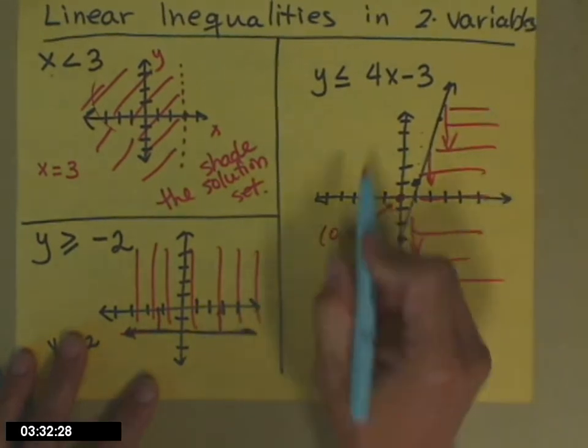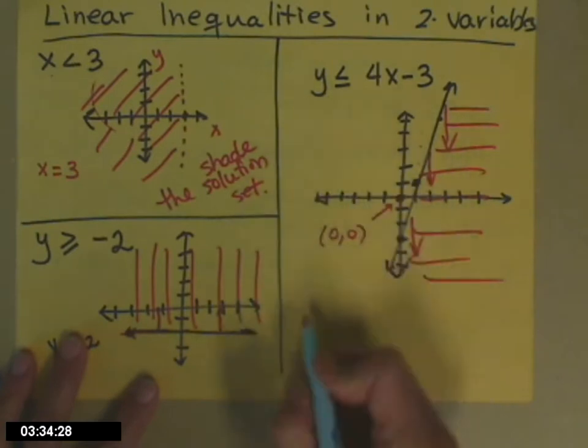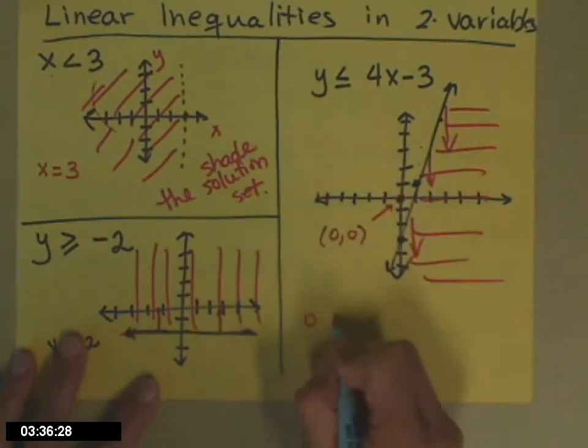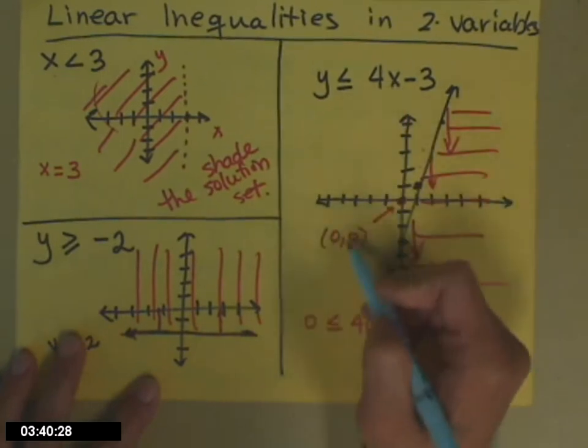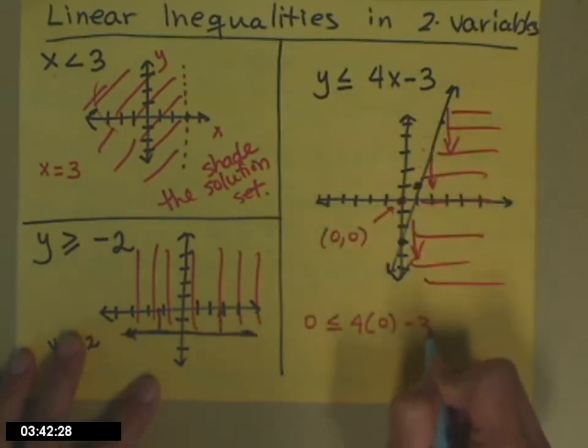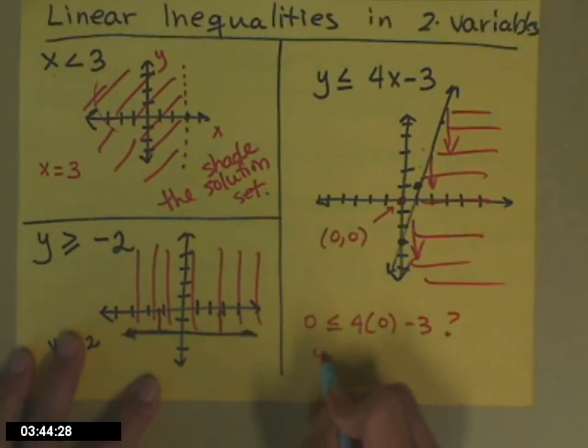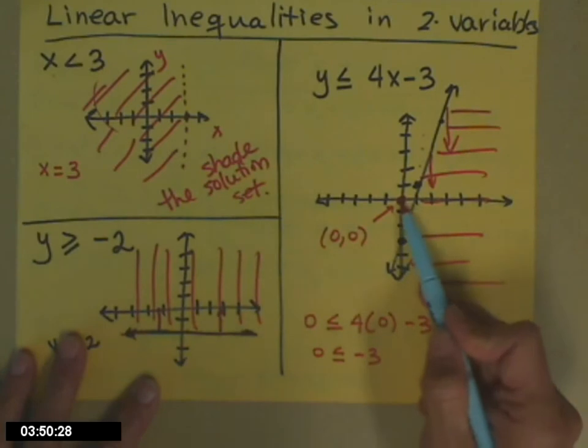So if I check 0, 0 into my equation, or inequality—a 0 in for the y—is 0 less than or equal to 4 times x (x is also being played by 0) minus 3? It's a question: is 0 less than or equal to negative 3? No, negative 3 is less than.